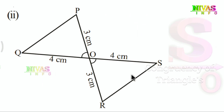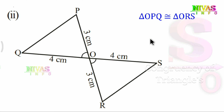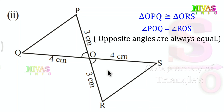Next, the second pair is QPO and ORS — these are two triangles. Why are they congruent? Here we look at the angles. Lines PR and QS intersect. If two lines intersect, we get vertically opposite angles, and opposite angles are always equal. So angle POQ is equal to angle ROS. These angles are equal, so we can apply the congruency criterion.